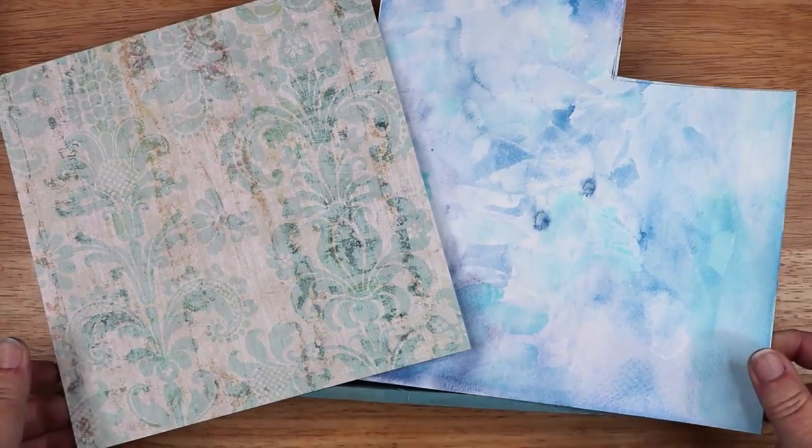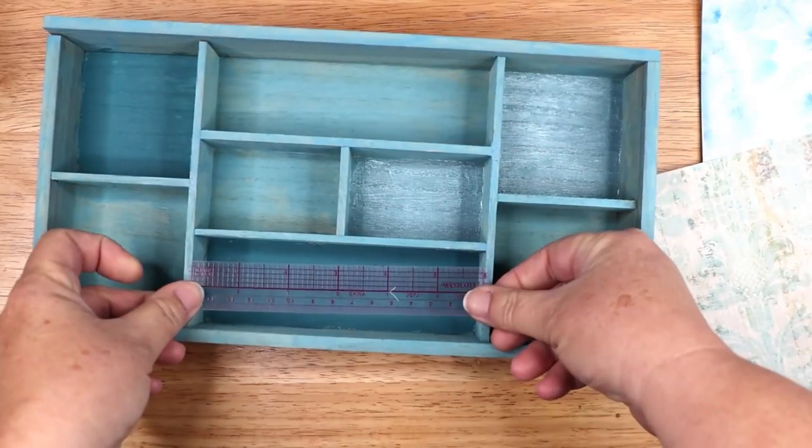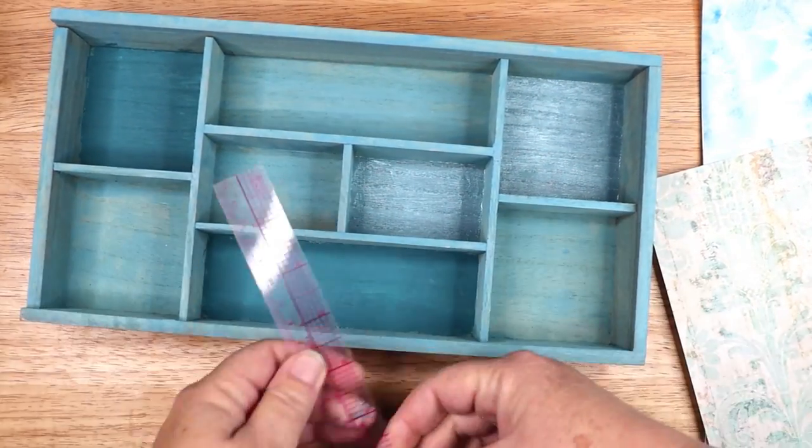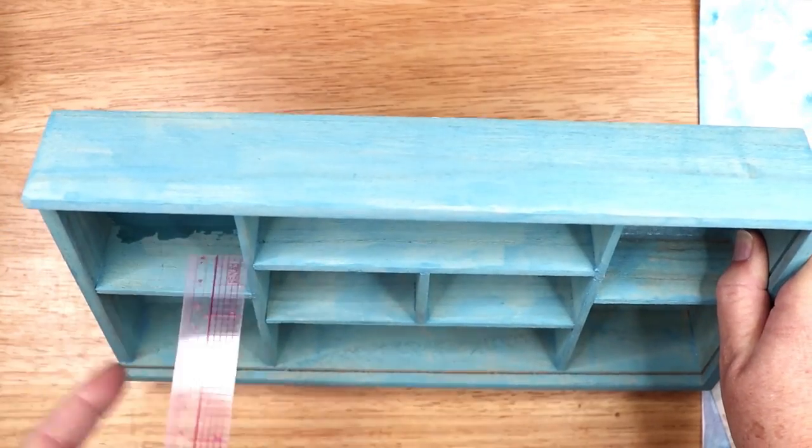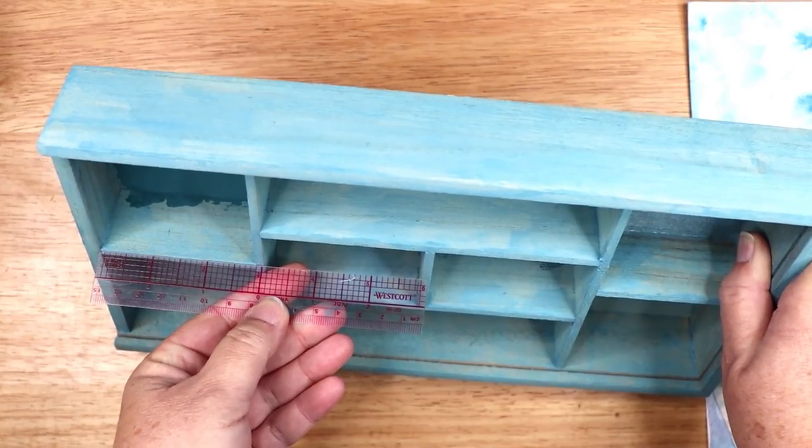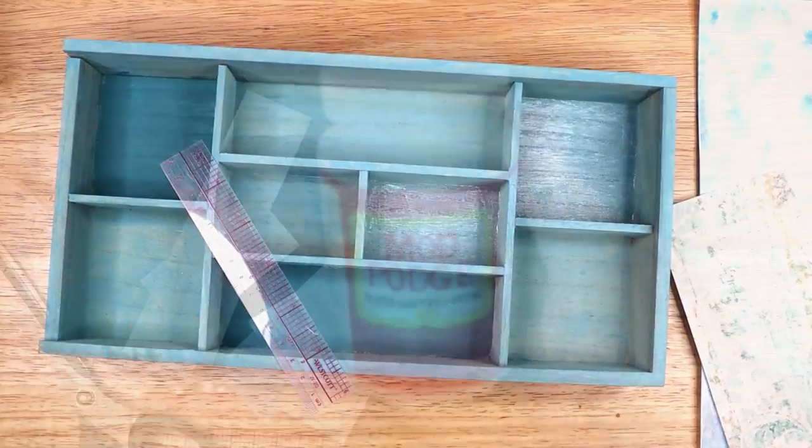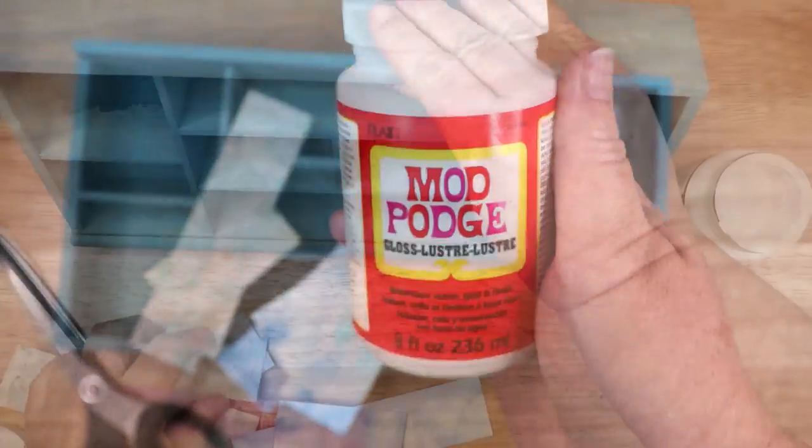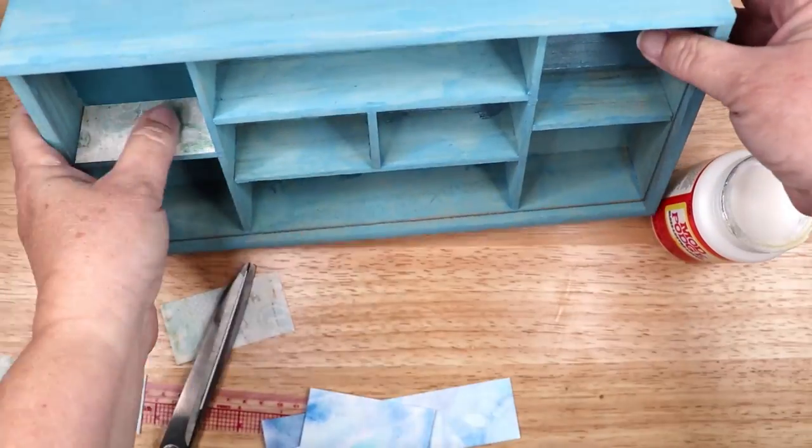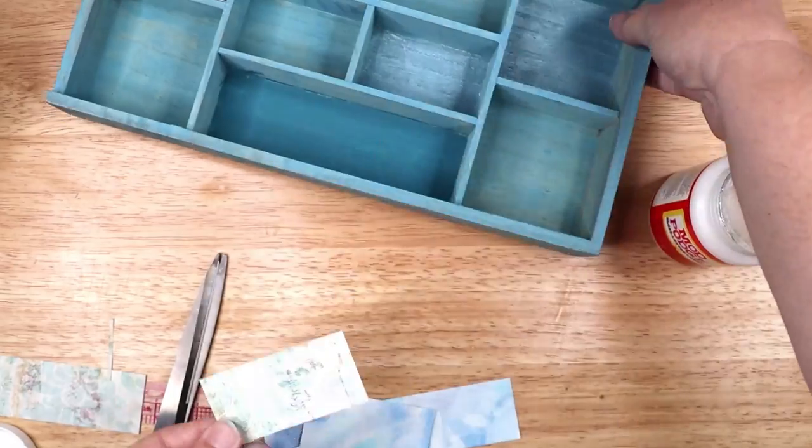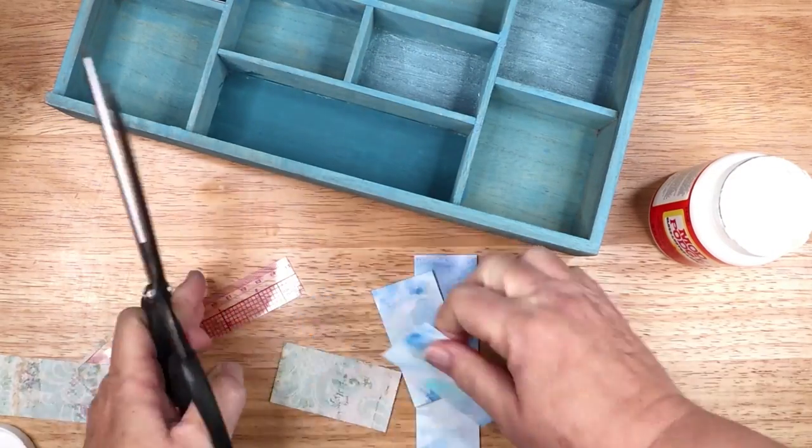Next, I decided to add a bit of scrapbooking paper to the bottoms and right sides of each compartment to add some more pattern to the box. I felt like it needed more detail, and so I chose two papers that represented the ocean. I measured the spaces and cut out all of the pieces. Then I used Mod Podge to adhere them to the shadow box.